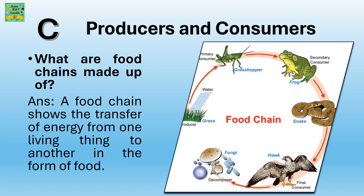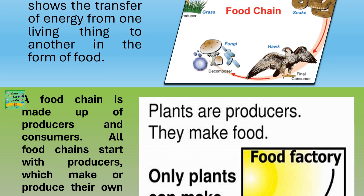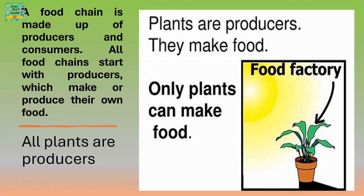Producers and Consumers. What are food chains made up of? A food chain shows the transfer of energy from one living thing to another in the form of food. A food chain is made up of producers and consumers. All food chains start with producers, which make or produce their own food. All plants are producers because they make their own food.